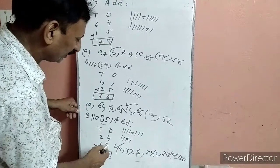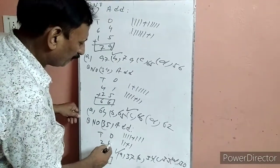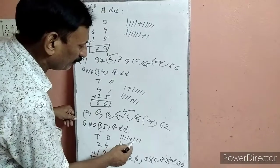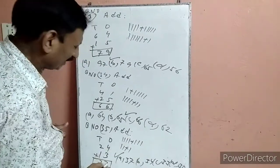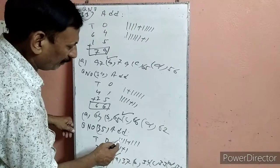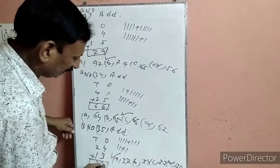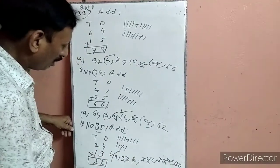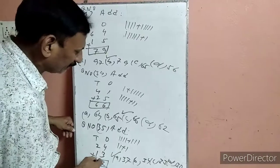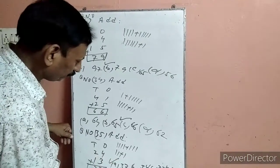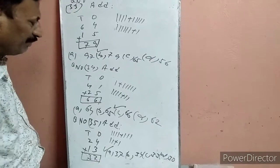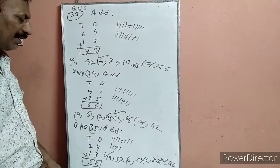Question 35: Add — 24 plus 30. Units: 4 में 3 को add किया: count करके 7 हो गया. Tens: 2 plus 1 — 1, 2, 3. Answer 37. एक पर हमने टिक लगाया.